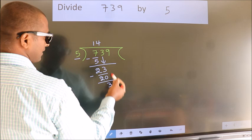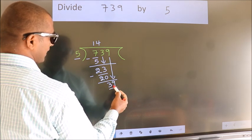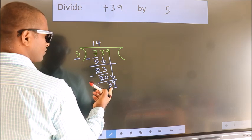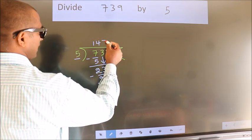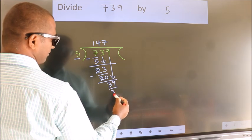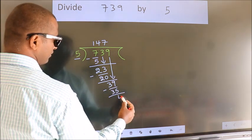After this, bring down the beside number. So 9 down. So 39. A number close to 39 in the 5 table is 5 sevens, 35. Now we subtract. We get 4.